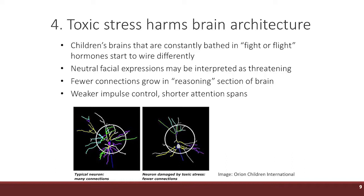The picture on the right is of a neuron of a three-year-old child who's experienced significant trauma. You see fewer connections. And what you don't see as well from that picture, but that is also happening, is that the connections that are there in that brain are stronger.